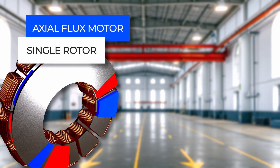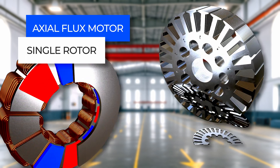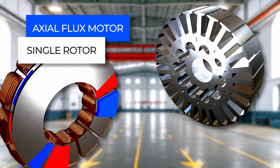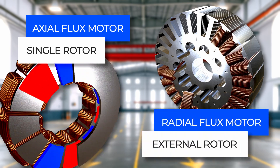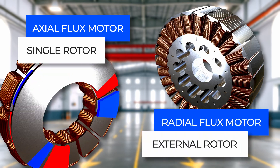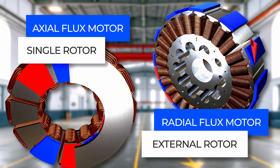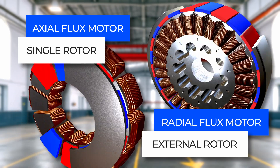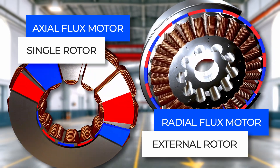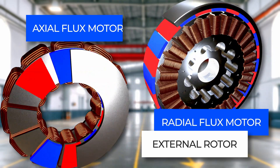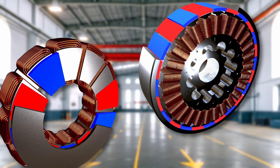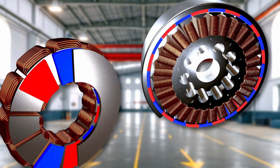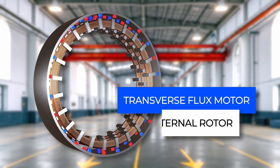These are axial flux motors and radial flux motors. Radial flux motors can be further subdivided into two types: motors with an internal rotor and motors with an external rotor. However, motors with an external rotor are primarily used for high torque radial flux motors.